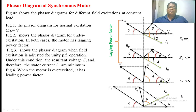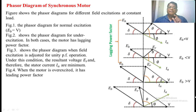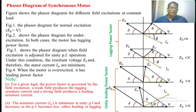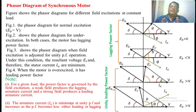By changing the field current of a synchronous motor, we can change the power factor from lagging to leading. The field current at which counter EMF equals the applied voltage is normal excitation. When the counter EMF is less than the applied voltage, it is under-excitation. When Eb is greater than V, it is over-excitation. Under excitation, the synchronous motor operates at a lagging power factor. Under over-excitation, it operates at a leading power factor. For a given load, the power factor is governed by the field excitation — a weak field current produces a lagging armature current, and a strong field current produces a leading armature current. At unity power factor, the armature current is at its minimum; during both lagging and leading conditions, the armature current increases.